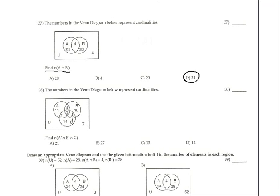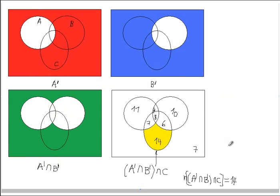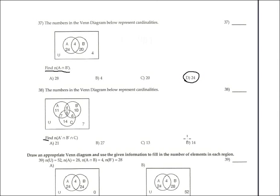Problem 38: find the cardinality of A'∩B'∩C. A complement is outside A in red, B complement is outside B. The intersection of A' and B' gives the green region, and intersecting with C gives the yellow part. The yellow part is associated with the value 14. The final answer for problem 38 is 14.